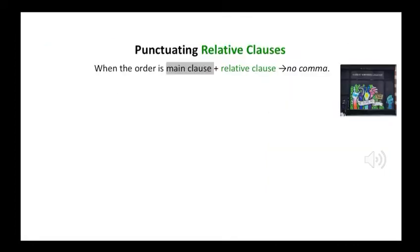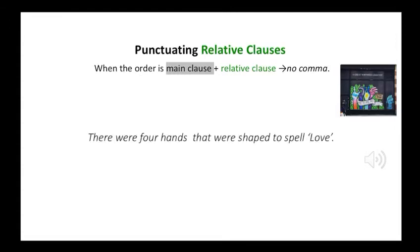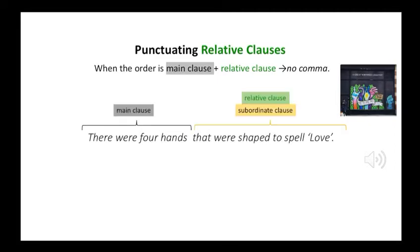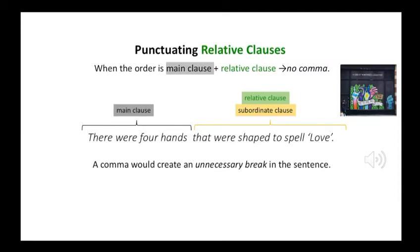Now, punctuating relative clauses — this is important. When the order is main clause then relative clause, you don't use a comma. For example: 'There were four hands that were shaped to spell love.' The main clause is 'there were four hands' and the relative clause is 'that were shaped to spell love.' A comma would create an unnecessary break in the sentence. The relative clause tells us the extra information about the main clause.